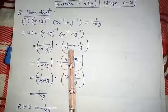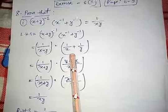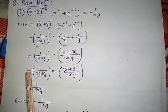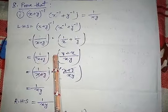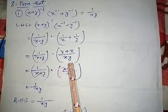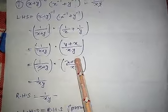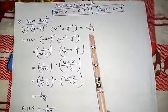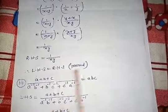Now all negative powers have been converted to positive. We do LCM — the LCM is xy, giving us (y + x) in the numerator. Since y + x and x + y are the same, they cancel with each other. So we are left with 1/xy, which is our left hand side. RHS is also the same, so it is proved.